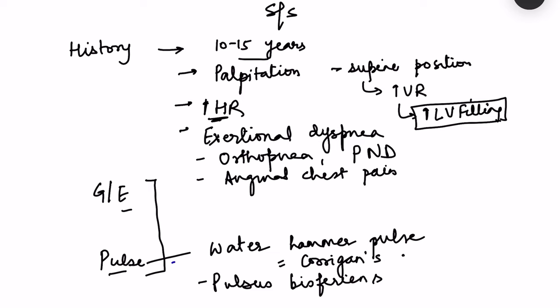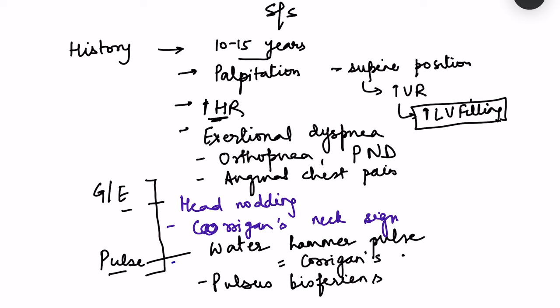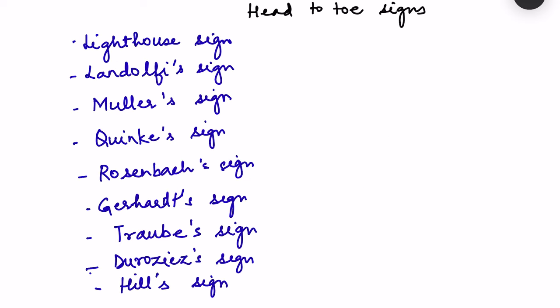On general examination there can be head nodding with each systole — a bobbing motion of the head indicating the force with which blood is ejected. The carotids show easily visible distension and collapse, known as dancing carotids or Corrigan's neck sign.